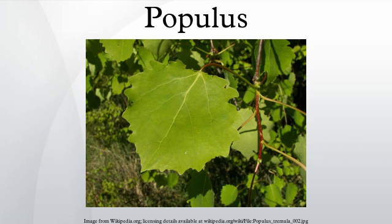Energy: there is interest in using poplar as an energy crop for biomass or biofuel in energy forestry systems, particularly in light of its high energy output ratio, large carbon mitigation potential, and fast growth. In the United Kingdom, poplar is typically grown in a short rotation coppice system for two to five years, then harvested and burned. The yield of some varieties can be as high as 12 oven-dry tons per hectare every year.